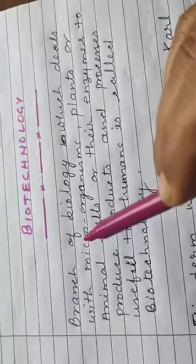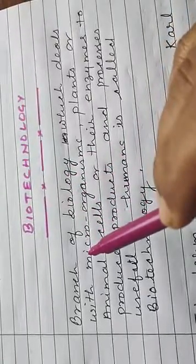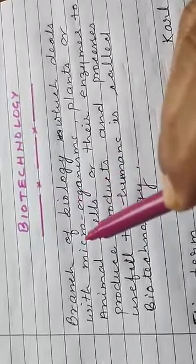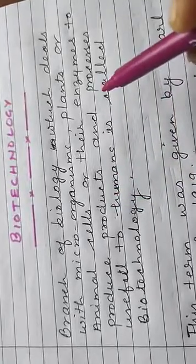And the question here: what is the exact meaning of Biotechnology? Biotechnology is a branch of biology which deals with organisms, plants or animal cells, or their enzymes to produce products and processes useful to humans, called Biotechnology.